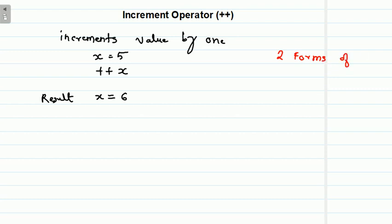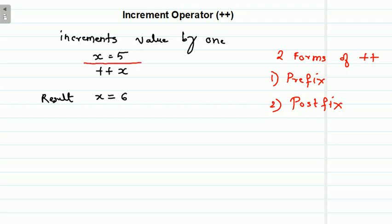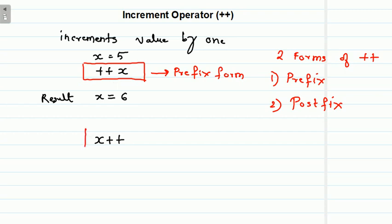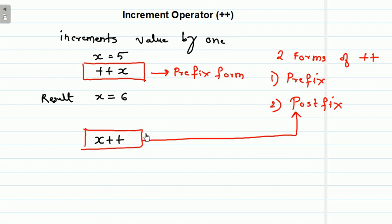Increment operator can be written in two forms. The first is called prefix form and the second is called postfix form. The form where the operator appears first — plus plus x — is the prefix form, because the sign appears first and then the operand. In postfix form it is written as x plus plus, where the operand appears first and then the operator. Increment and decrement operators are exceptions to the general unary operator syntax, because generally unary operators have the operator appearing first followed by the operand.